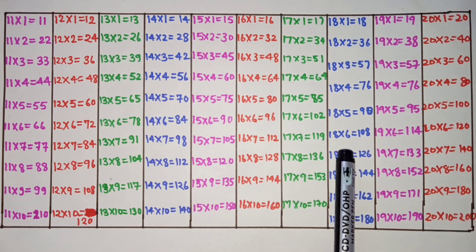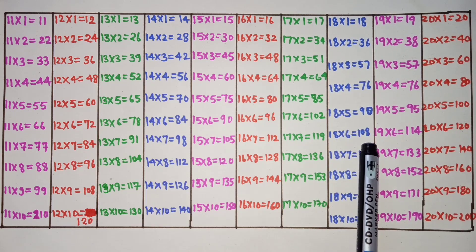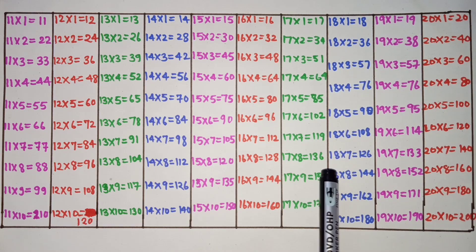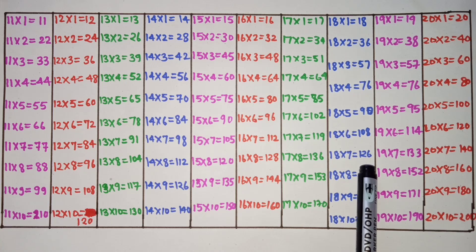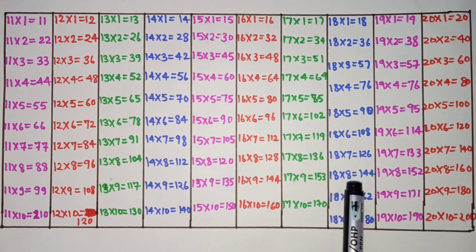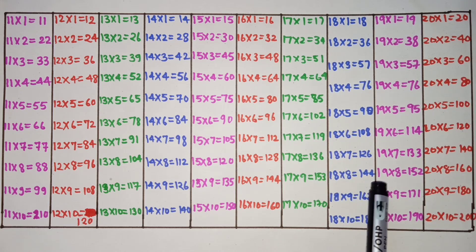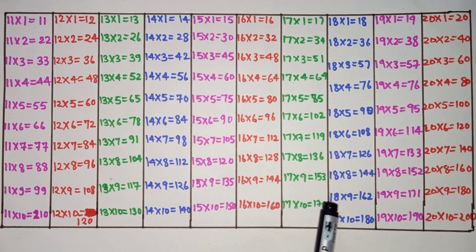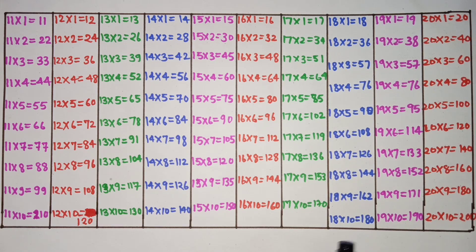18 6s are 108, 18 7s are 126, 18 8s are 144, 18 9s are 146, 18 9s are 162, 18 10s are 180.